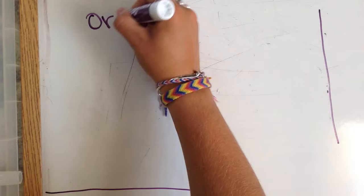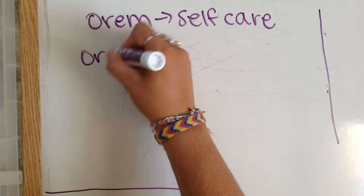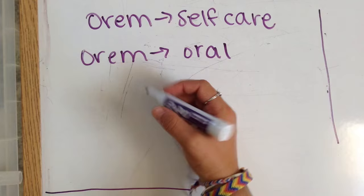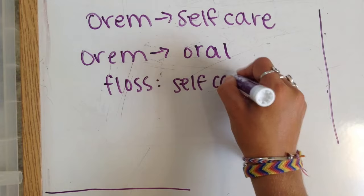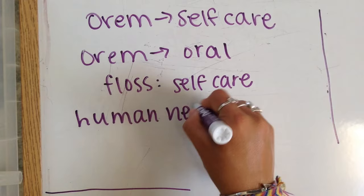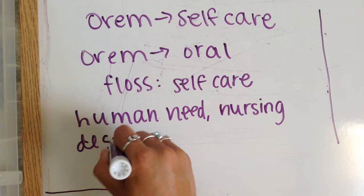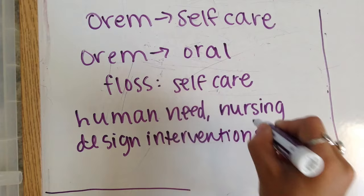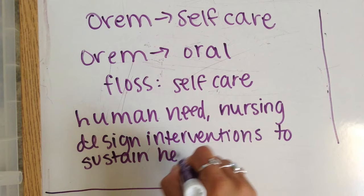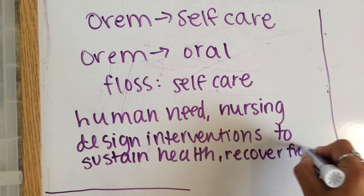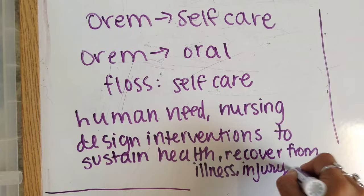Up next comes Orem's theory, and this is going to be the self-care theory. I remember that because Orem sounds like 'oral,' and when you brush your teeth, floss, and whatnot, that is an example of self-care. Self-care is a human need, and therefore nursing designs interventions to sustain health and recover from illness or injury.